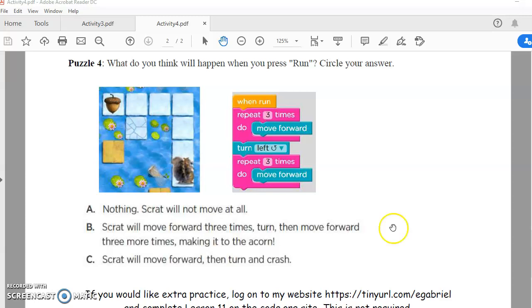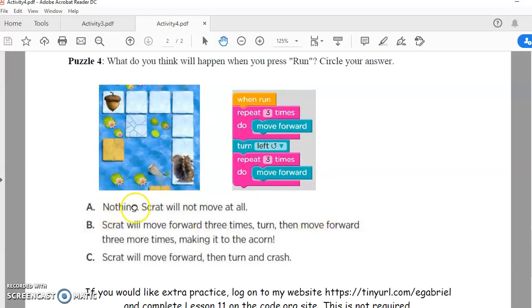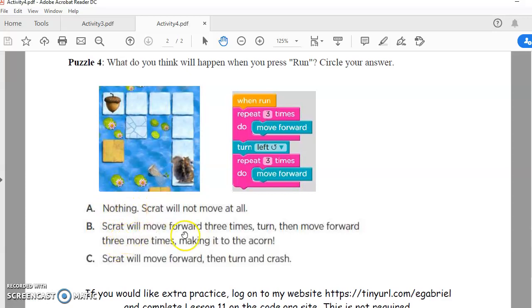So your choices are either nothing, Scrat will not move at all. Scrat will move forward three times, turn, then move forward three more times, making it to the acorn. Or C, Scrat will move forward, then turn, and crash.